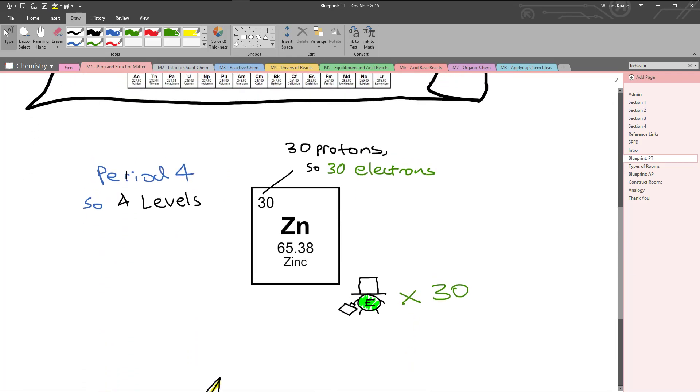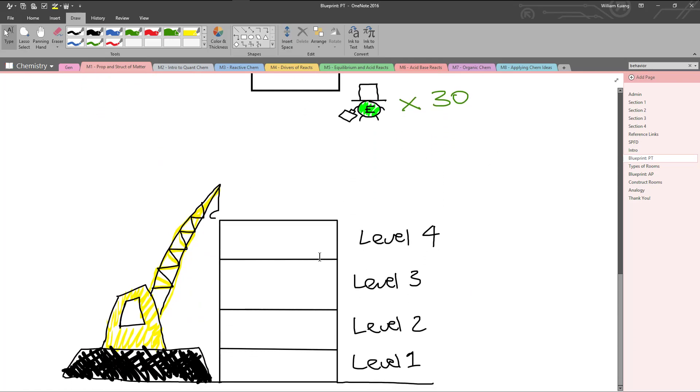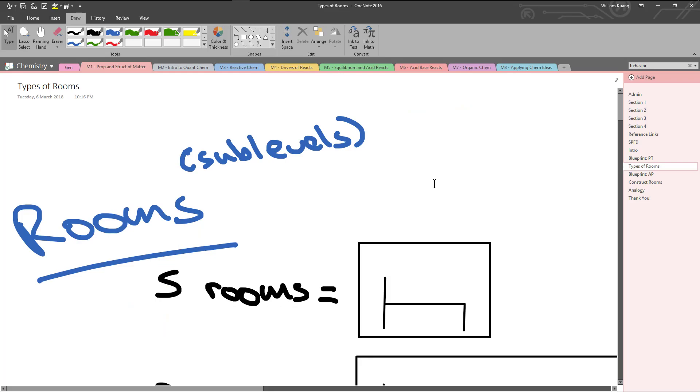So let's look at that a little bit closer. Being in Period 4 means you have four levels. So you have four levels to the Hotel Zinc. Now if you have an atomic number of 30, that means you have 30 protons, but in a neutral atom, this also means you have 30 electrons. So your hotel has four levels, and it needs to accommodate 30 electrons. The first thing you do is start building your hotel with four levels. But how do you fill this hotel now with rooms?